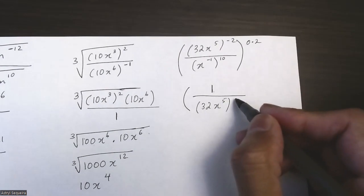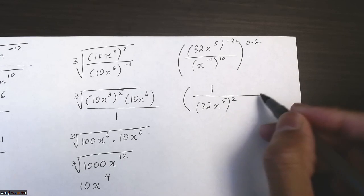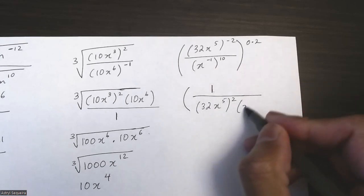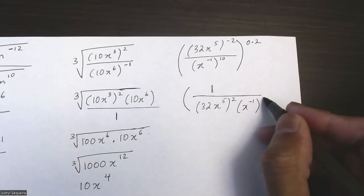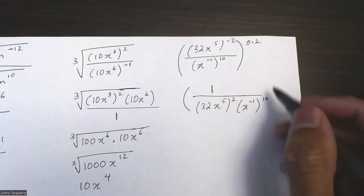The bottom is just going to be this, and then this term is there as well: x to the negative 1 times 10. The order doesn't matter which way you write it.